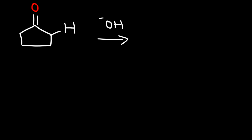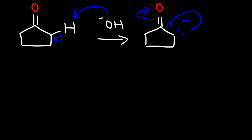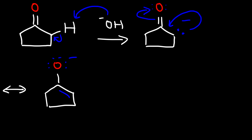We're going to show the mechanism where only one alpha hydrogen is replaced by a bromine atom. The first thing that happens is we deprotonate the alpha hydrogen, and we get an intermediate with a negative charge on the carbon atom. This is known as the enolate ion. We can also draw the resonance form of it, which looks like this.